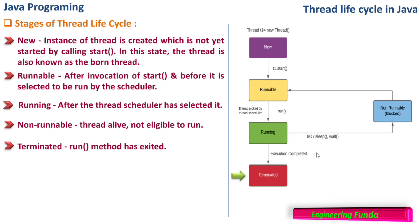After execution is completed, the thread goes to the Terminated state, meaning the run method has exited. Once execution is complete, it exits the run method properly, which tells the system that the execution of run is complete. So these are the stages of the thread life cycle. We have seen two ways of implementing a thread: first is extending the Thread class, seen in the previous video, and in this video we have seen implementation of thread using the Runnable interface.